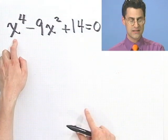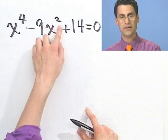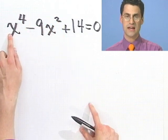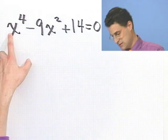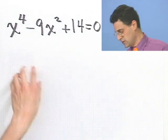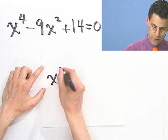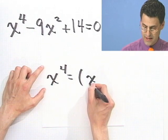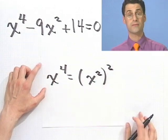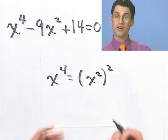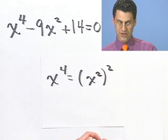But the thing to notice is that in fact I have an x squared here and I can view this as x squared squared. That is to say I could just use a little law of exponent property here and notice that x to the fourth is just x squared squared. So really this is a quadratic equation in terms of x squared.